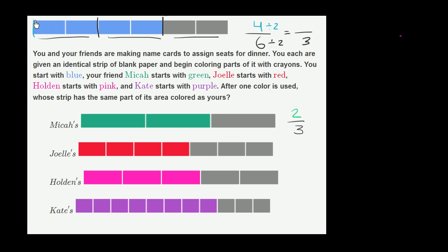And then if I were to group the blue strips into groups of two, then I would have one, two of them that have actually been colored blue. So if I divide both the numerator and the denominator by two, I get two-thirds, which is the exact same fraction as Mika.